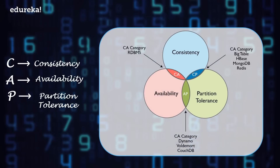Now let's see the CAP theorem and check where these databases lie. The CAP theorem is a concept that a distributed database system can only have two of the three properties: consistency, availability, and partition tolerance. It is very important in the big data world when making trade-offs based on your use case. Cassandra has a decentralized architecture where any node can perform any operation — it provides AP from the CAP theorem, that is availability and partition tolerance. MongoDB and HBase provide CP from the CAP theorem, that is consistency and partition tolerance.